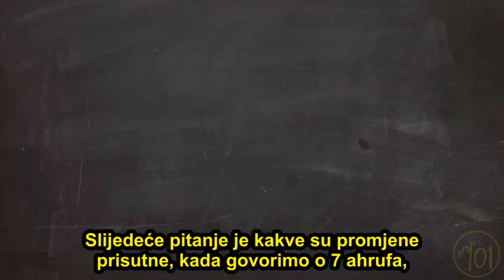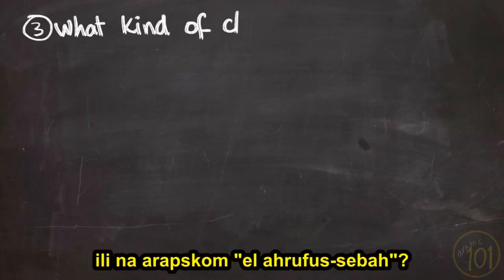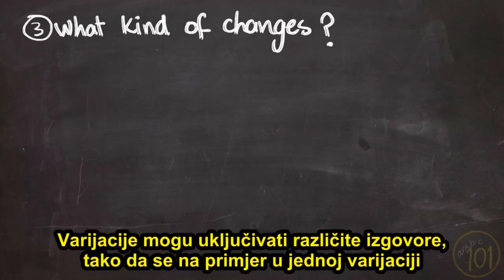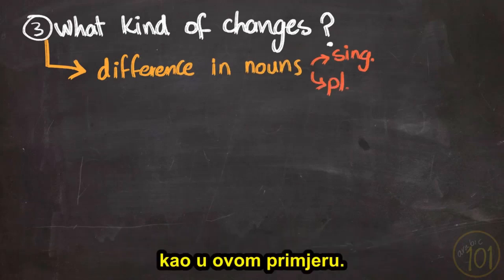The next question is: what kind of changes are there when we talk about the seven ahroof? The variations may involve differences in nouns — for example, in one variation a word is mentioned in the plural form and in another it is mentioned in the singular form.